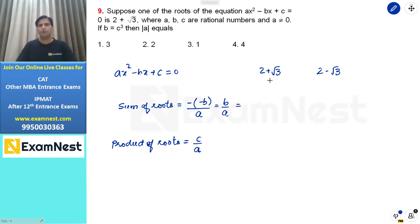For sum of roots, if we add these two roots, we get 4. So from this, the value of b equals 4a.